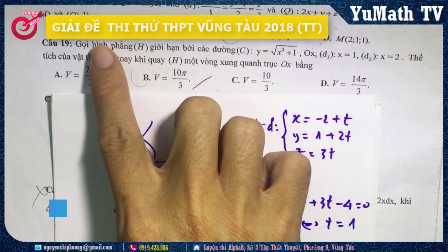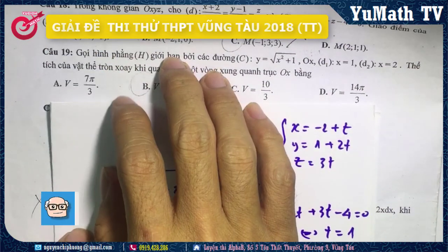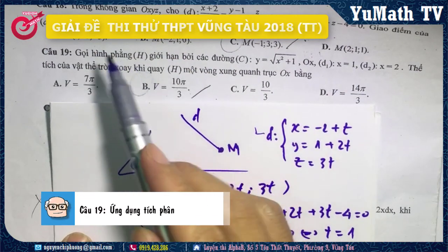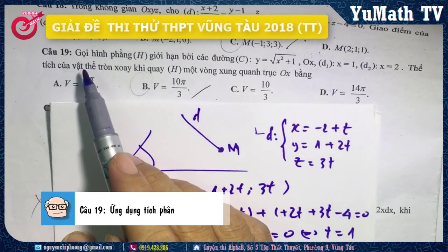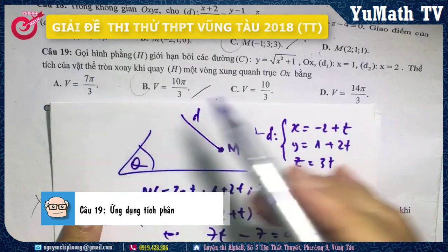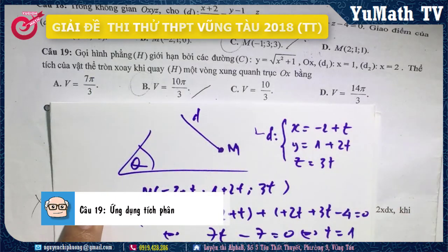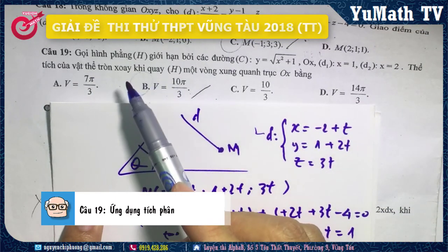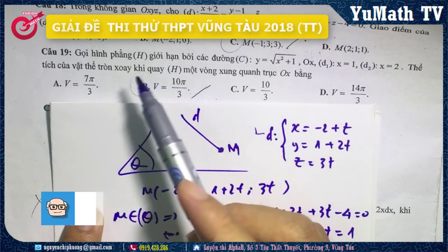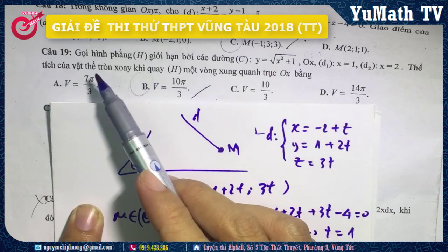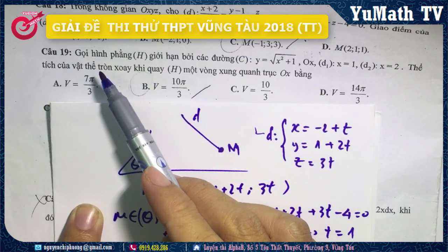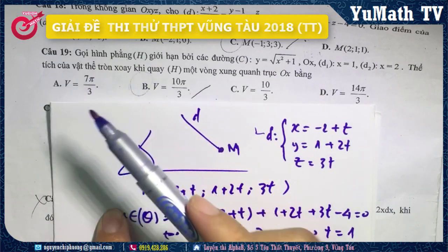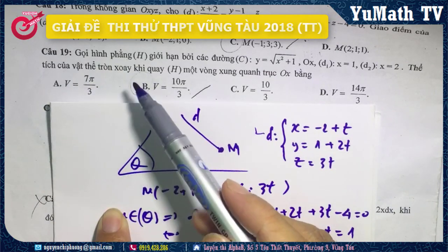Câu số 19 là câu liên quan đến ứng dụng của tích phân trong việc tính thể tích tròn xoay. Các bạn có thể theo dõi các clip trước, mình cũng có giới thiệu về dạng này rồi.